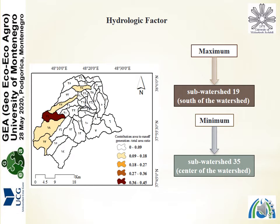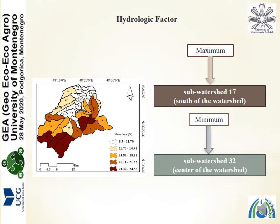Regarding the hydrologic factor, we obtained the maximum contribution area to runoff generation to total area ratio in sub-watershed 19 in the south of the watershed, and the minimum in the southwest, specifically sub-watershed 35, situated in the center of the watershed. The maximum mean slope was observed in sub-watershed 17 in the south, and the minimum was observed in sub-watershed 32, located in the center of the watershed.